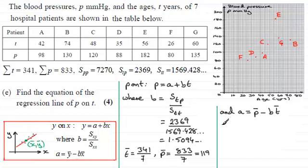Substituting those values in, we have A equals the mean of P, which is 119, minus B, which we found out, this unrounded version, is 1.5094 and so on.